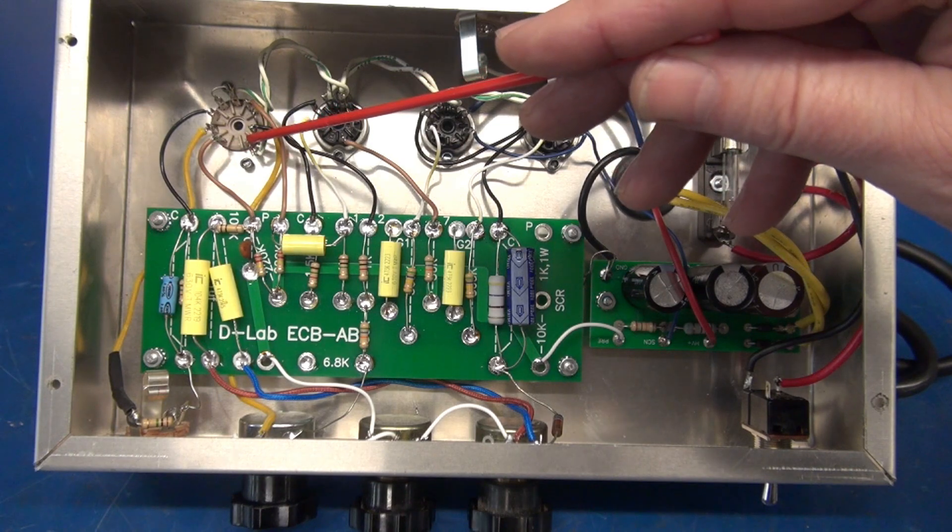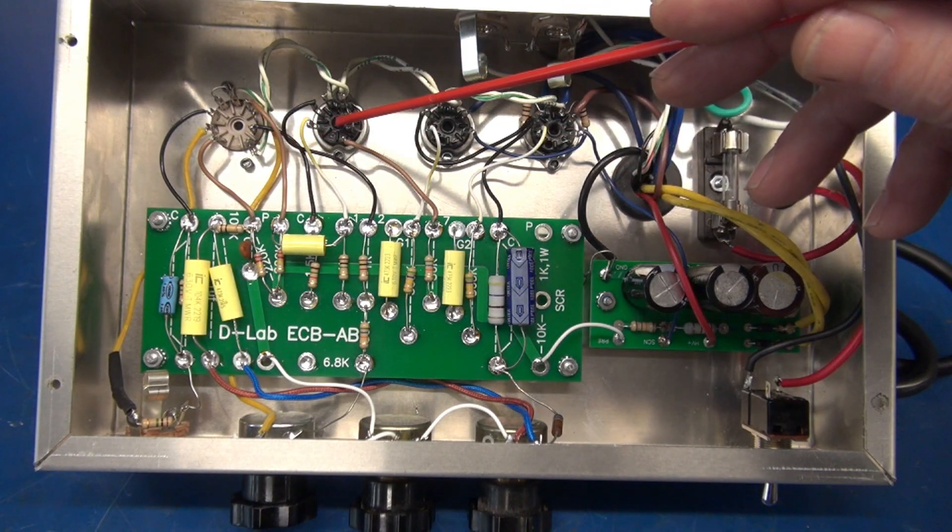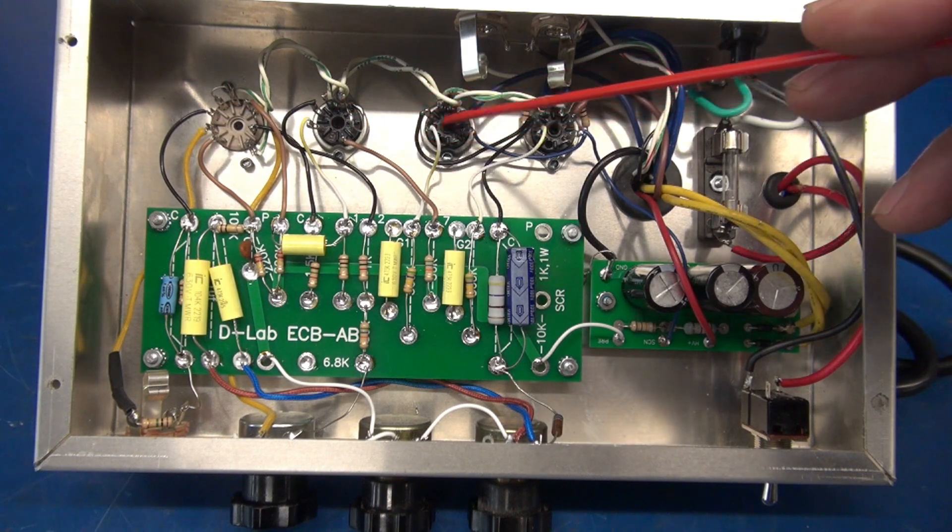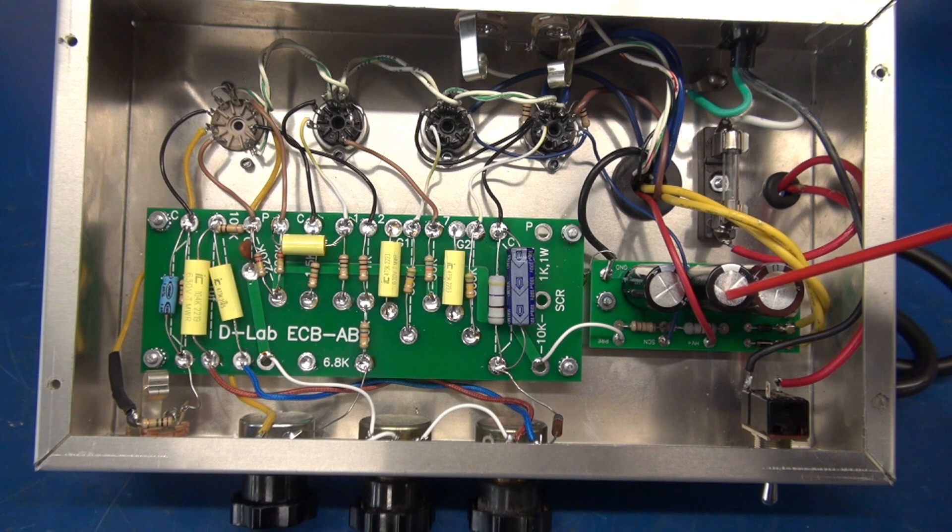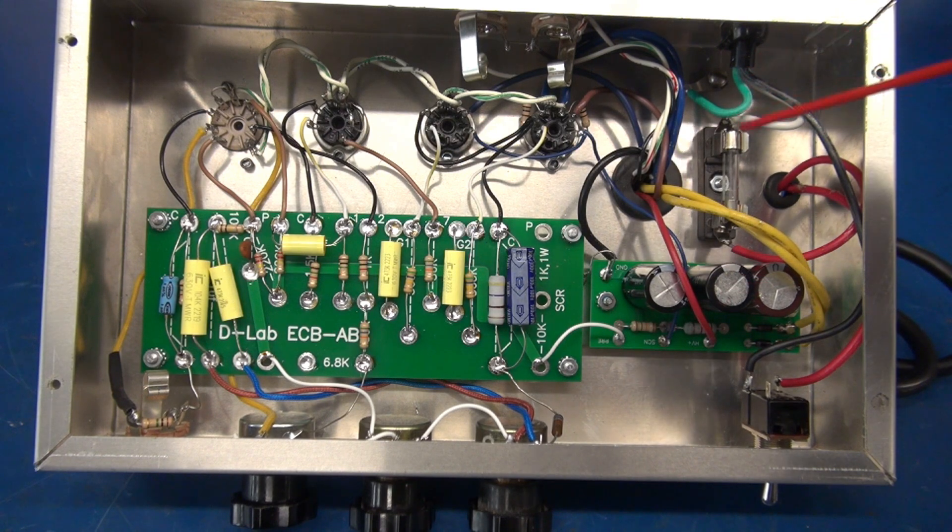So this is my 12AX7. Here's my inverter, the 6AV6, and the pair of 6AQ5s. I'm using a Cub 1 power supply board. My power comes in here through the fuse, controls.